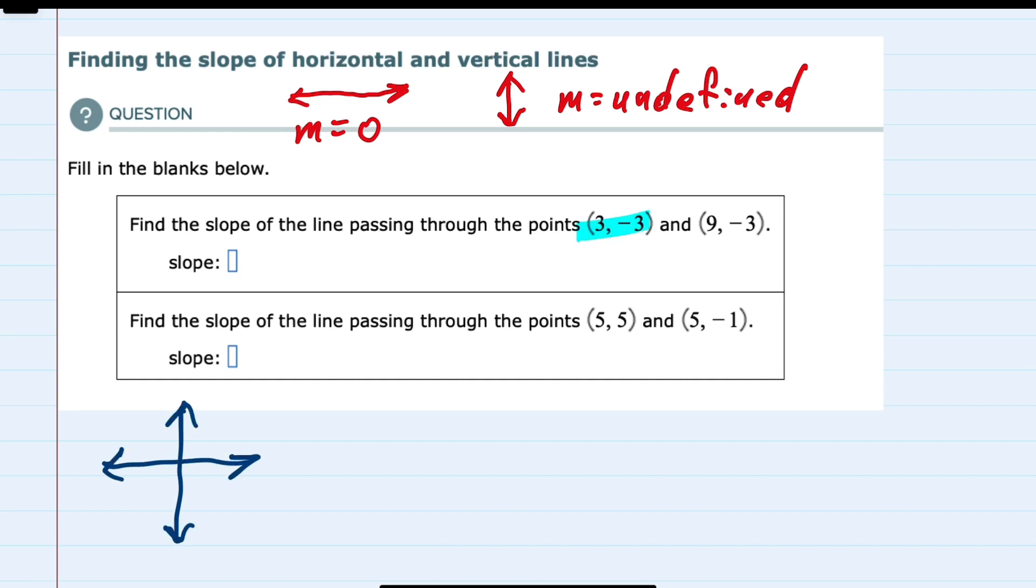The first is (3, -3), so 3, -3, and (9, -3). Those have the same y values with different x values, so that would be a line that is horizontal. So the slope here is zero.